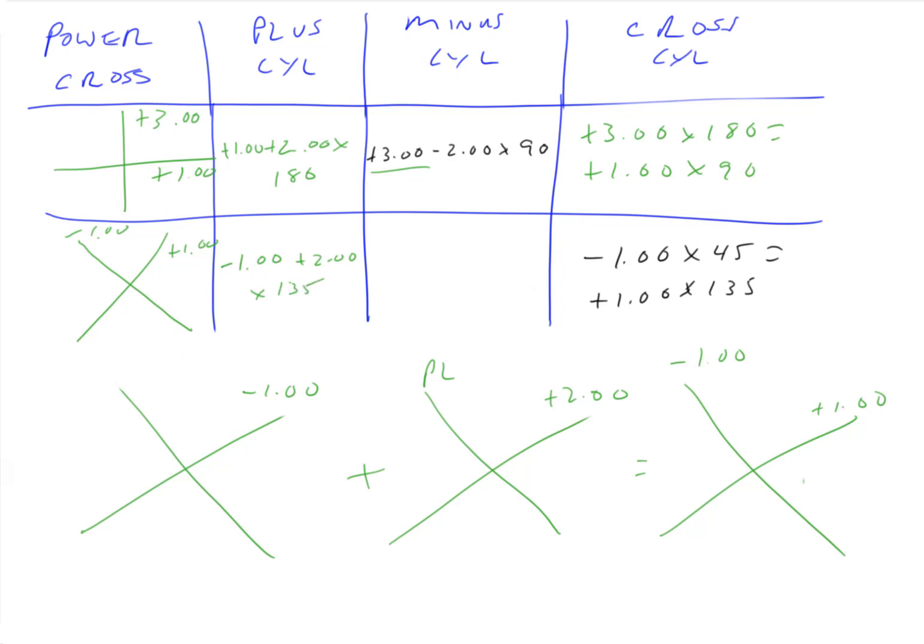Last but not least, minus cylinder. So for minus cylinder, we want to start with the highest number on there. That's our spherical lens. Plus one. Plus what equals minus one? Minus two. Plus one plus what equals plus one? Plano. So our spherical lens we know has to be plus one. Our cylindrical lens must be minus 2.00 axis 45. Okay.